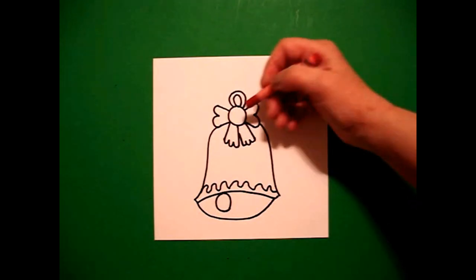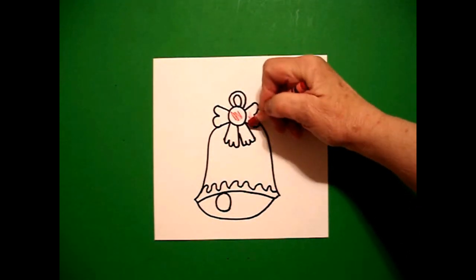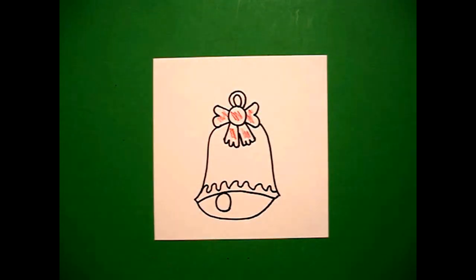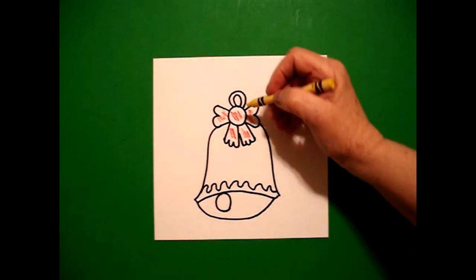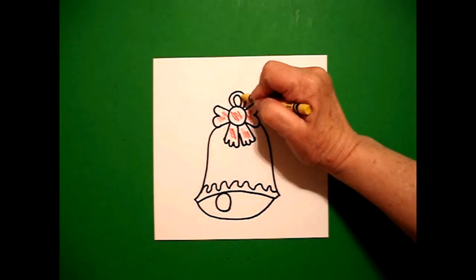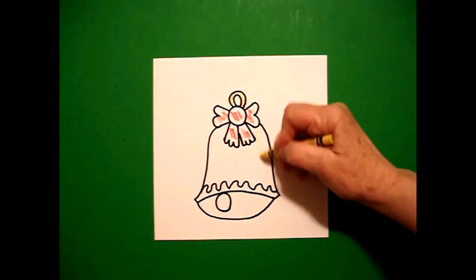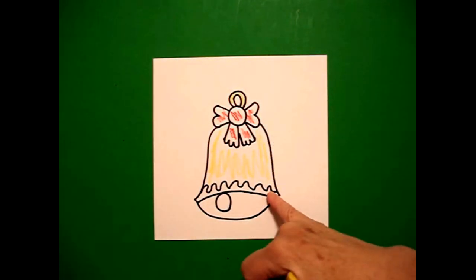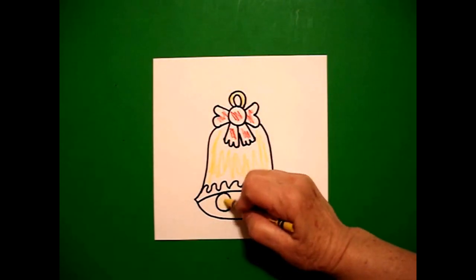Okay, to color this one in, I used red on my bow. And then I made the main part of the bell yellow. And that's this little section up here. And then this section down here. I'm going to leave this section white, but I'm going to color in my clapper yellow.